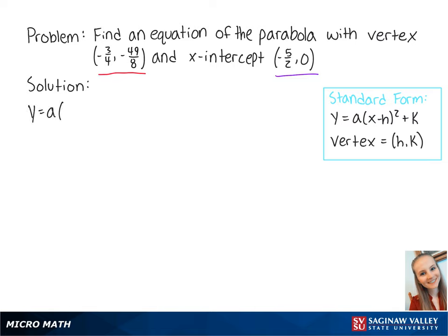we get y equals a times (x + 3/4) squared minus 49/8. Now we plug in the point (-5/2, 0) and solve for a.